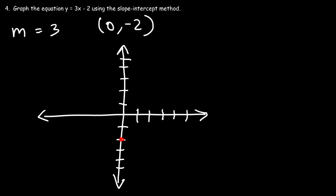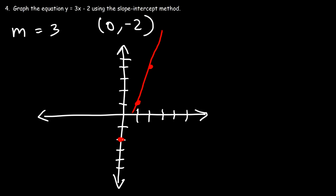Here's the first point at (0, -2). The slope is 3, which represents rise over run, so we need to rise 3 units and go over 1 unit to the right to get the next point. The next point is at (1, 1). Then rise 3 over 1 again — the next point is (2, 4). Connect these points with a straight line, and that's the graph of y equals 3x minus 2.